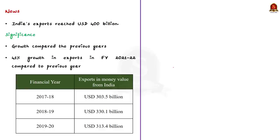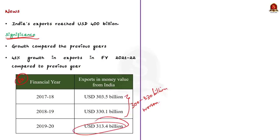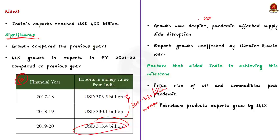Let us look at the significance of India attaining the 400 billion US dollar export target. From RBI data, even before the pandemic, India's exports hovered around 300 to 330 billion US dollars. During the pandemic year exports fell further. On March 21, 2022, exports hit 400 billion US dollars, with another 10 billion dollars worth of goods planned to ship. Compared to 2020-21, this is a 41% growth.